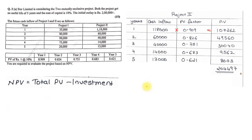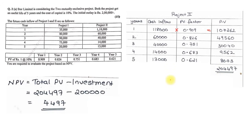Applying the NPV formula for Project 2: Total PV of 2,04,497 minus the investment of 2,00,000 gives an NPV of approximately 4,497. Comparing both projects, Project 1 gives a higher NPV of 29,130, so Project 1 is better and should be selected. This completes the 15-mark question on the NPV method.